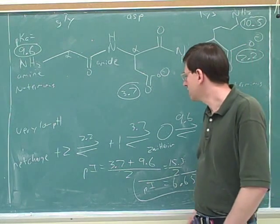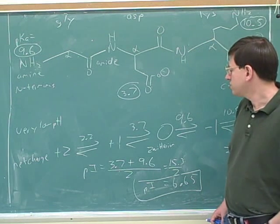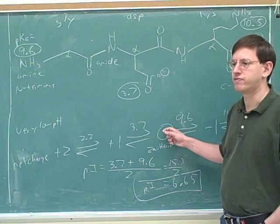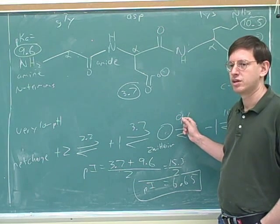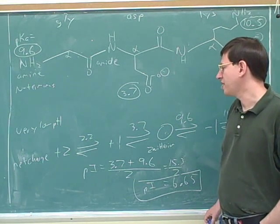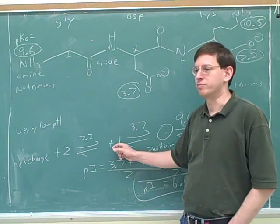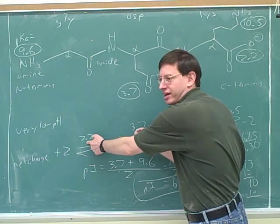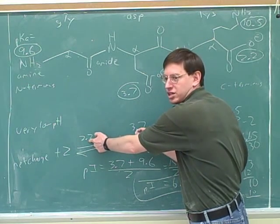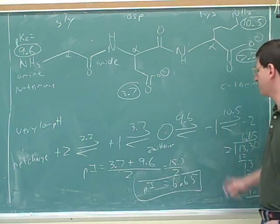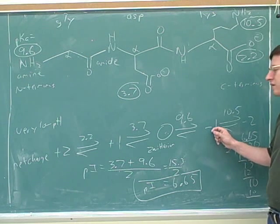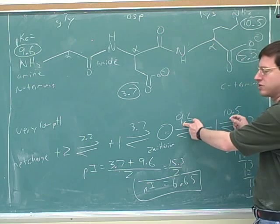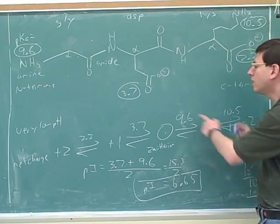Now, notice if he asks you what is the pH at which we get the maximum amount of this form, you would average these two numbers. How about if he asks you what's the pH at which we get the maximum amount of this form? You would average these two numbers. There's no special name for that. That's not called the PI, but he could still ask you that question. Or he could ask you what's the pH at which this is the maximum form? Well, then you would average these two numbers. That's not the PI, but that's still a question you could ask. I've seen those questions in the exam book.